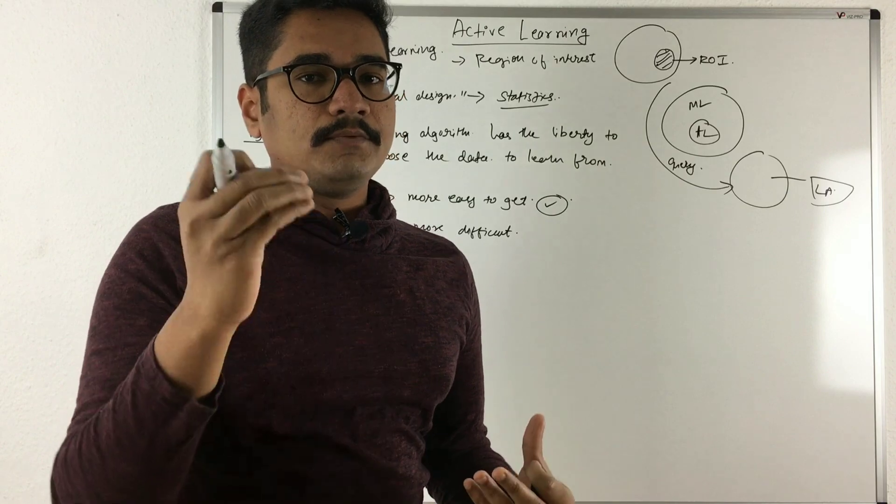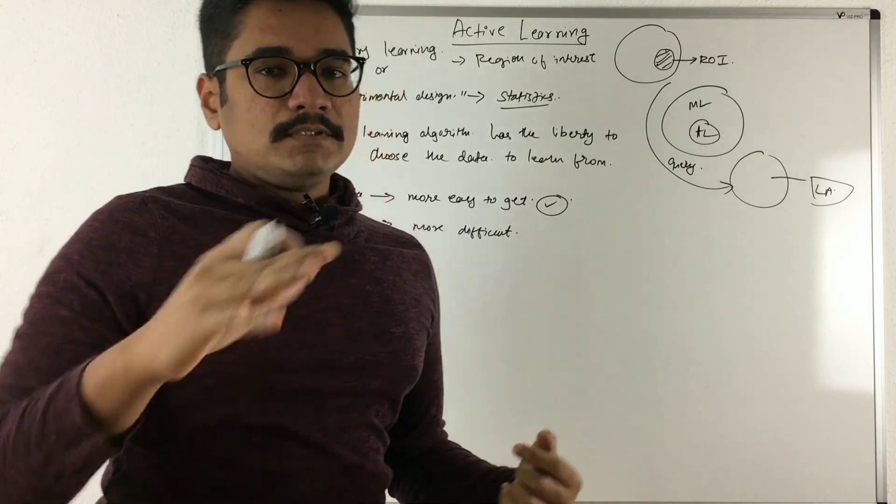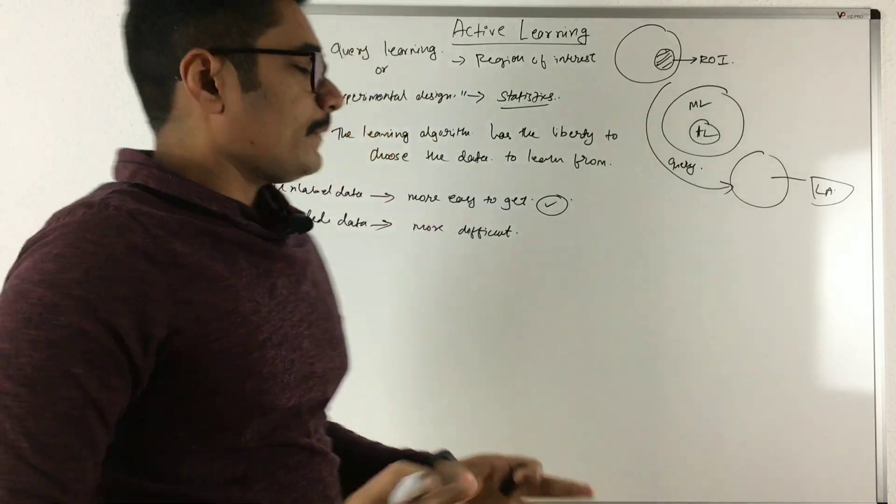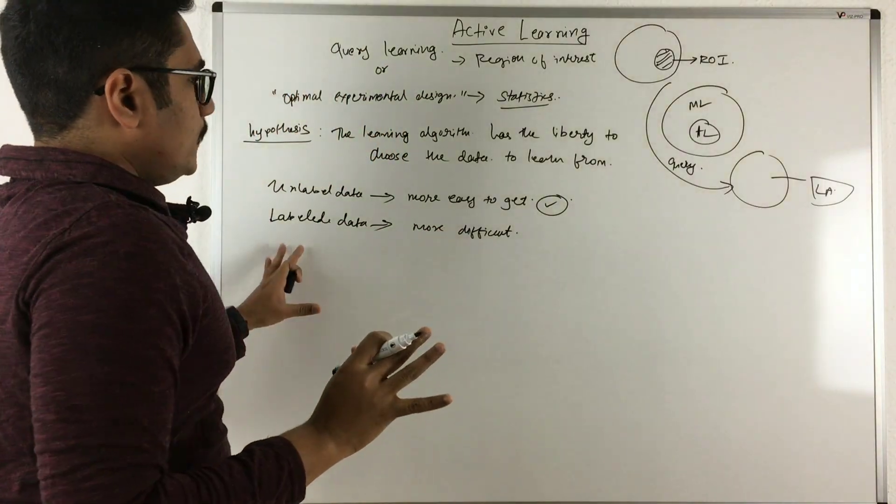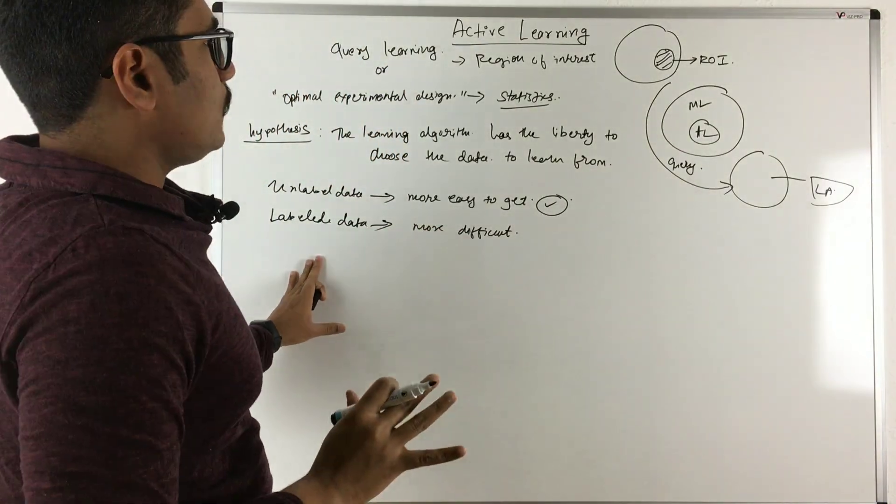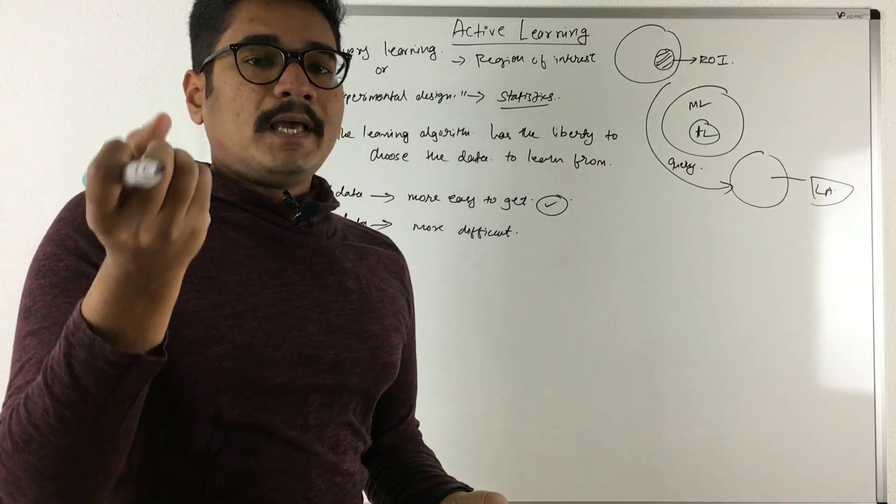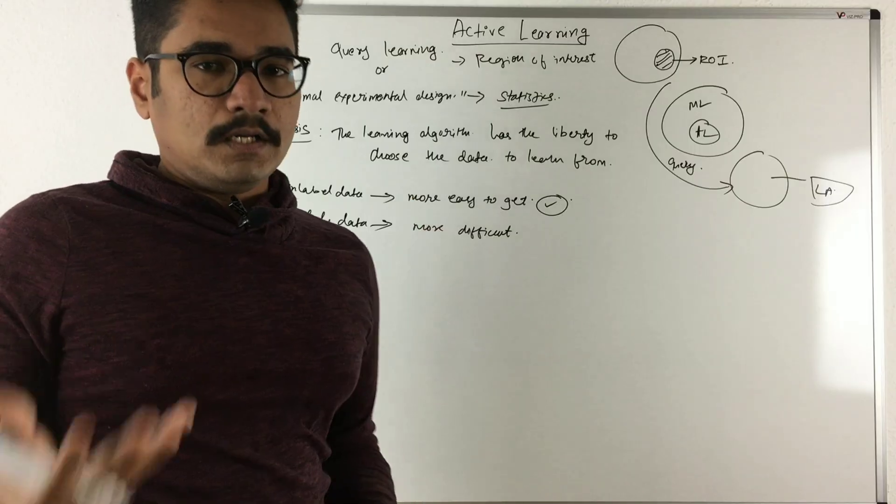Supposedly tomorrow if a new person comes and if he has some other kind of disease which has completely different characteristics from the list or the template which you already have, then you need to have this kind of active learning or query-based learning because then you would be extracting that relevant information which was not there earlier.